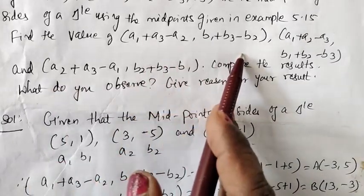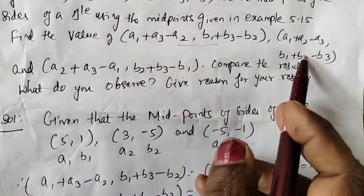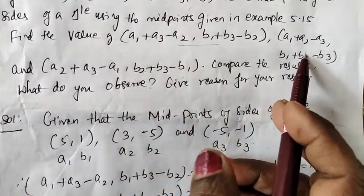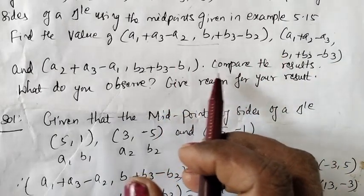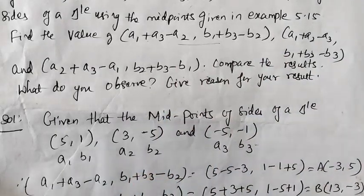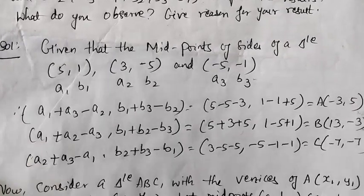In the formula, find the value of these expressions. This represents the vertex. We can use the formula to prove the result and compare. First, what do you do? The given points are midpoints of the triangle, and we need to find the vertices of the triangle.